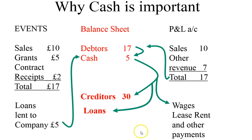All these arrows represent the kind of cash flow problem of the company.